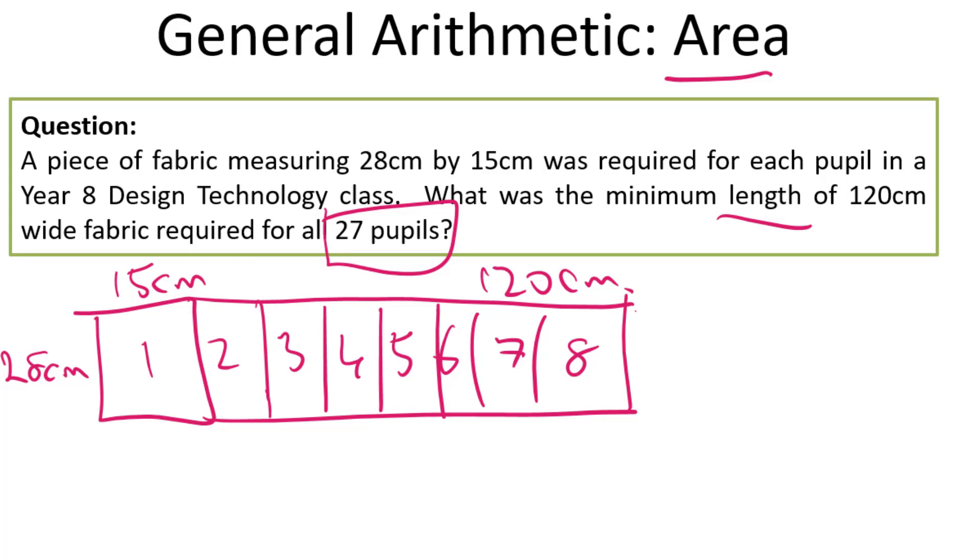Remember this is not the mental arithmetic section, you would be allowed to use your calculator to work out that there's eight of these. So if we had a roll of this fabric and its length, as they're telling us here is 120 by 28, that would be enough for eight of the pupils, but that's still not enough because we have 27 pupils.